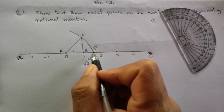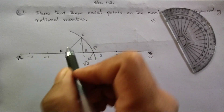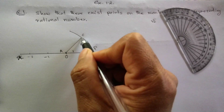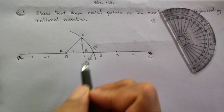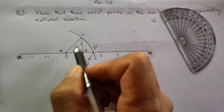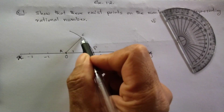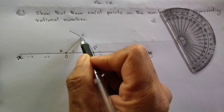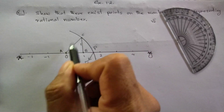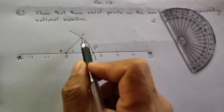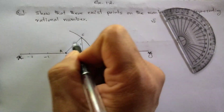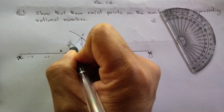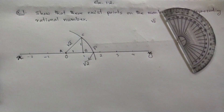So the square root of 2 is the length of AC. A, C will appear as root 2. As you can see, here is the representation.